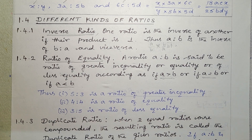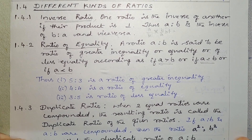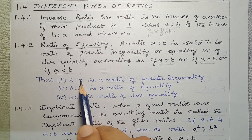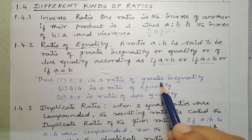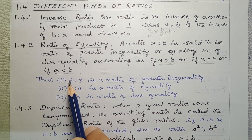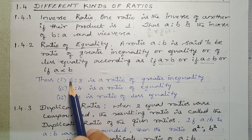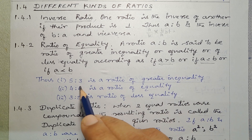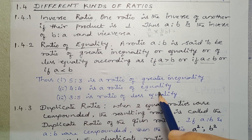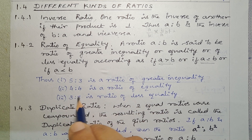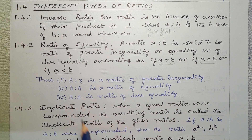For example: 5 is to 3 is a ratio of greater inequality, since the antecedent (5) is greater than the consequent (3). 4 is to 4 is a ratio of equality, since both values are equal. 3 is to 5 is a ratio of less inequality.